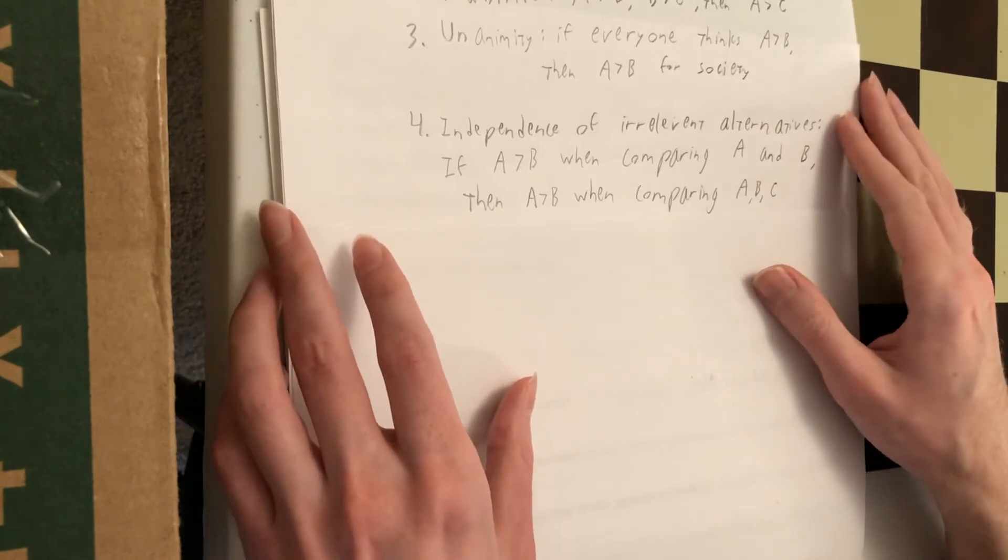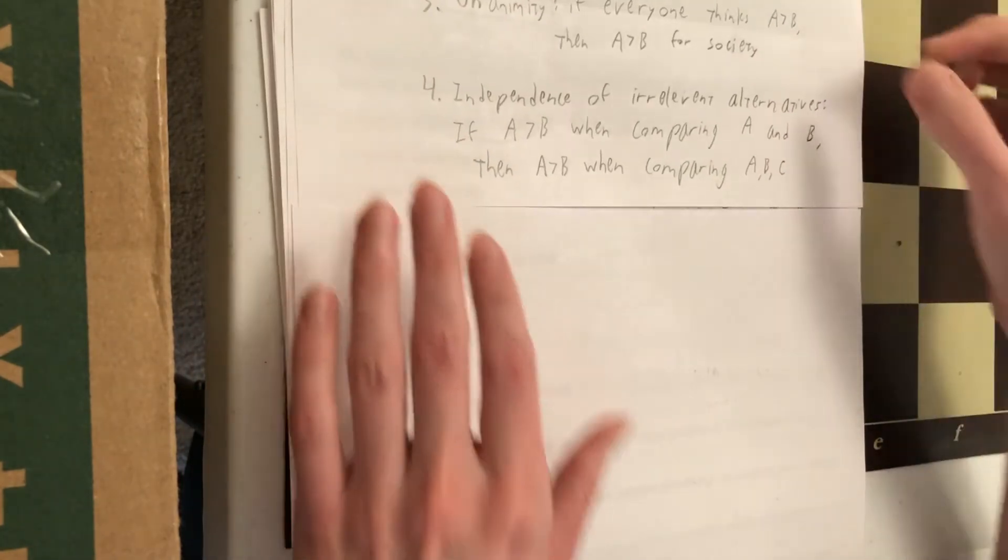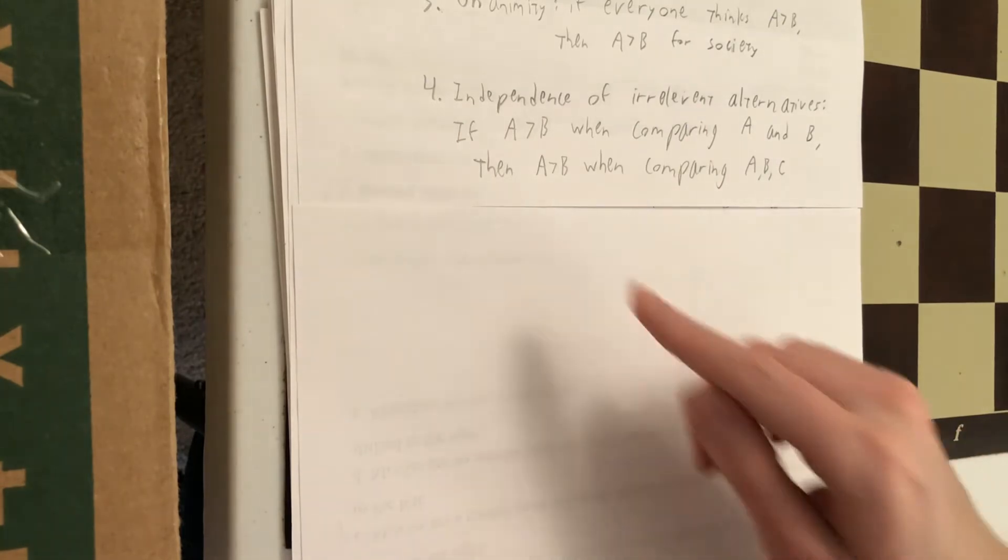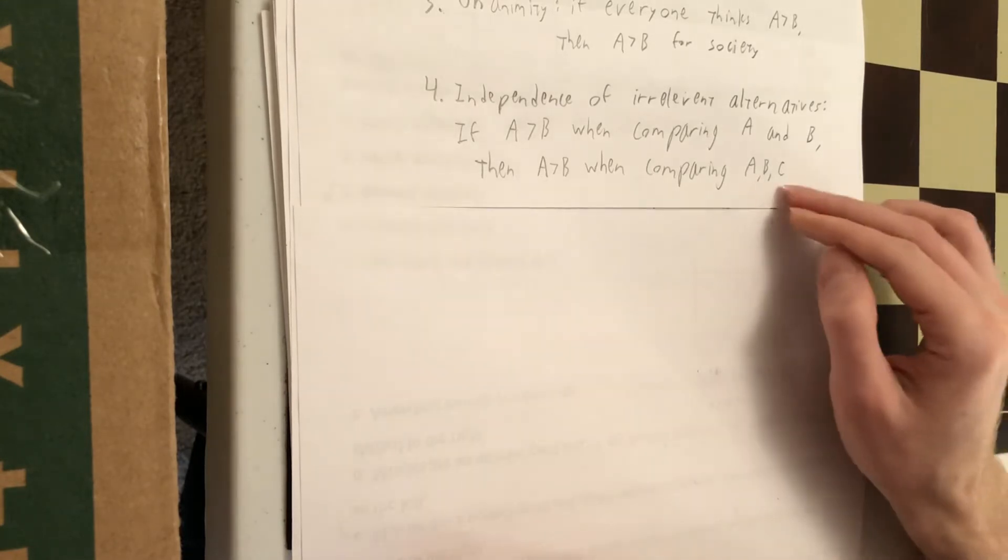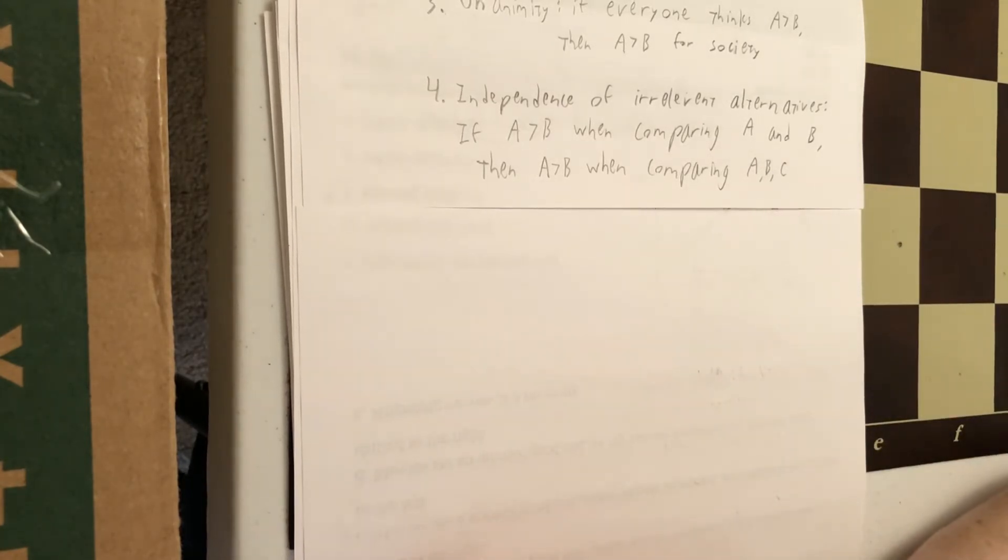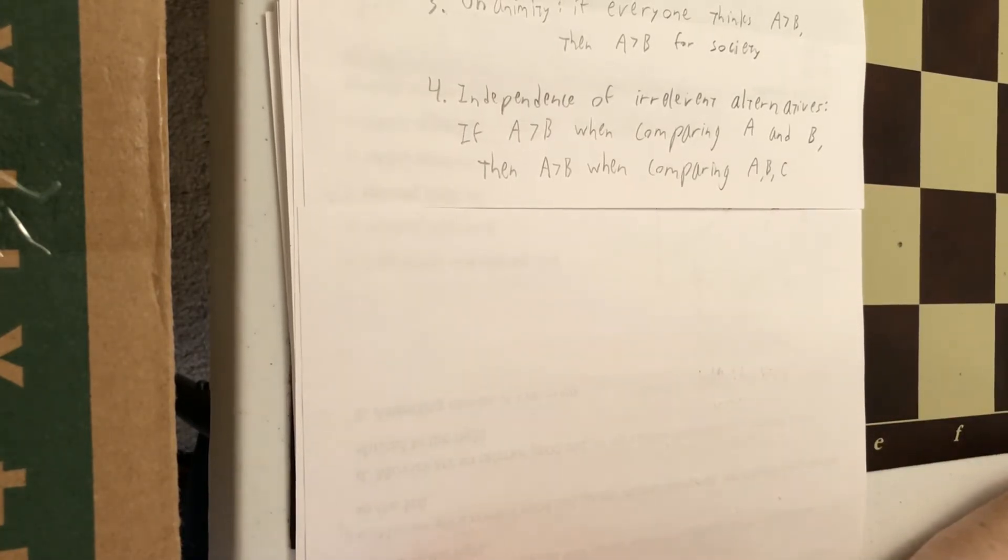You can see why that'd be reasonable. It'd be very strange if you preferred, let's say, Trump over Biden if it's just Trump and Biden, but then you prefer Biden over Trump if it's Trump, Biden, and some third-party candidate. That irrelevant alternative, C, shouldn't change your preferences over Trump versus Biden.